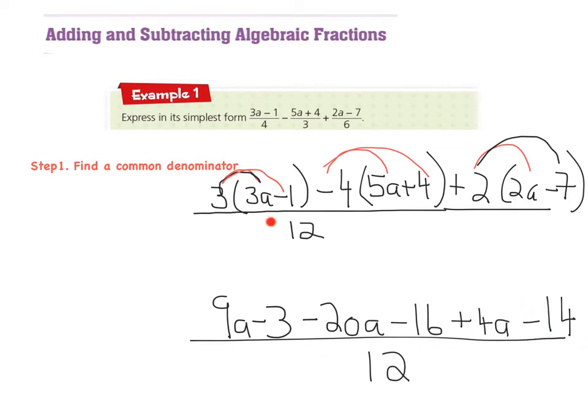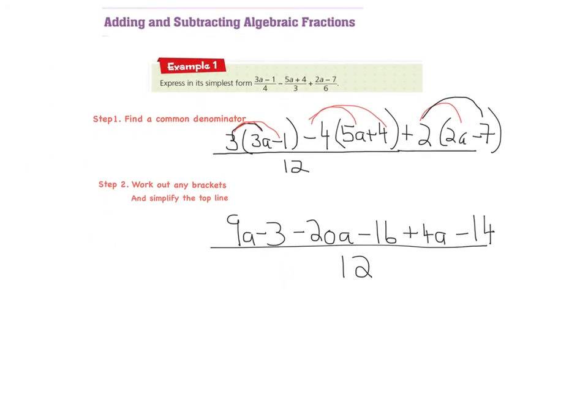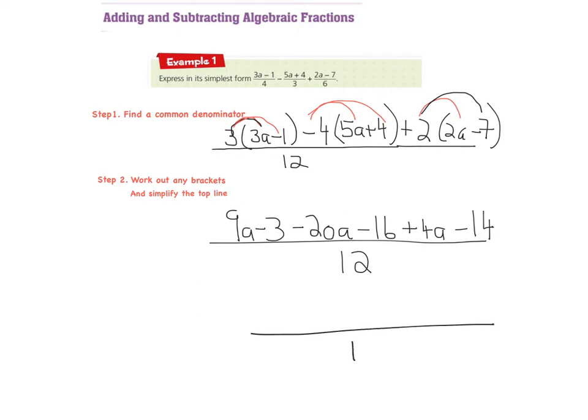Okay, so I've just written the step 2 here. Work out any brackets and simplify the top line. So we've worked out the brackets. We're now going to simplify this, which is essentially grouping. We're going to group all of the algebra together. So we're going to group the 9a, the minus 20a, and the plus 4a. So we're going to bring them together. And then we're going to bring the numbers: minus 3, minus 16, minus 14. So, again, we're just continuing on this. And so on the bottom, we still have 12. We haven't really done anything with that. But we're going to simplify the 9a minus 20a plus 4a.